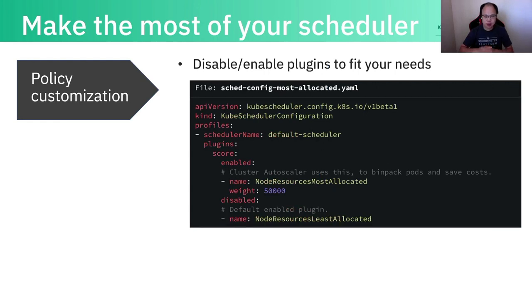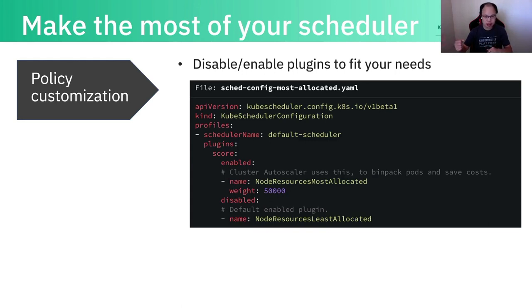We have a default set of plugins, but that doesn't prevent you from using another plugin to replace the default plugins or to add additional plugins. For example, by default we enable the least allocated plugin, which means we prefer to schedule pods evenly across the cluster. But in some use cases, like cluster autoscaler, it's totally the opposite. It prefers to make the use of existing nodes as much as possible, because in CA's case spinning up a new machine wastes money. So in the case of CA, you may want to use the most allocated plugin and disable the least allocated plugin.